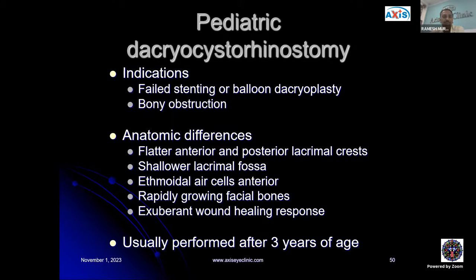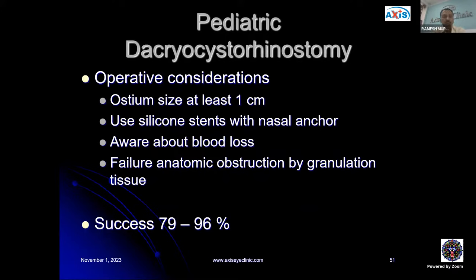Pediatric DCR is indicated when stenting or balloon dacryoplasty has failed, or when there is complex bony obstruction. Important anatomic differences in children include flatter anterior and posterior lacrimal crests, shallower lacrimal fossa, more anterior ethmoidal air cells, rapidly growing facial bones, and exuberant wound healing. DCR is usually performed after three years of age. Operative considerations: ostium size should be at least one centimeter; silicone stents with nasal anchor are preferred; blood loss must be carefully monitored. Success ranges between 79–96%.